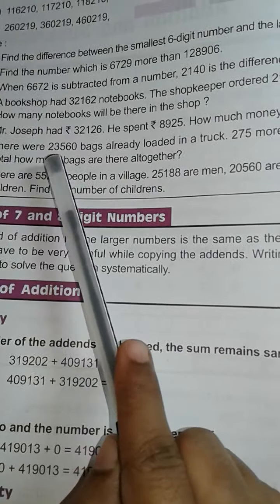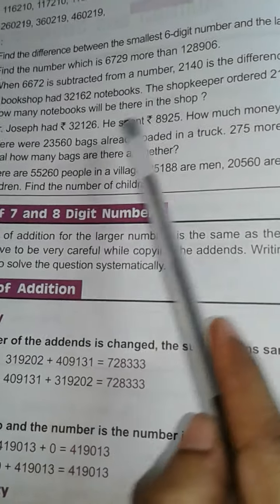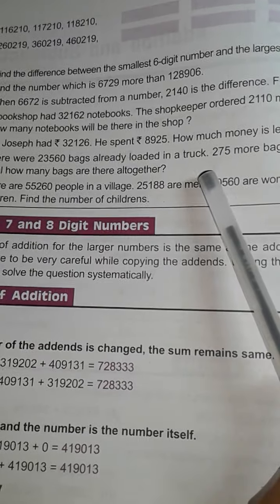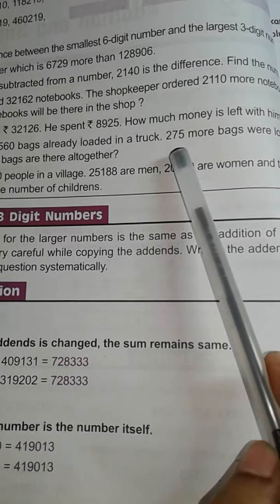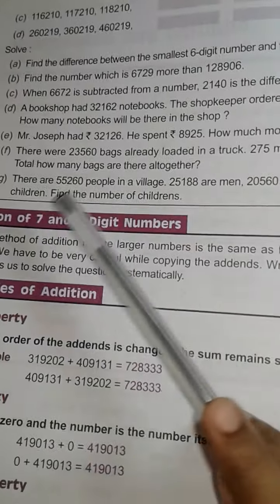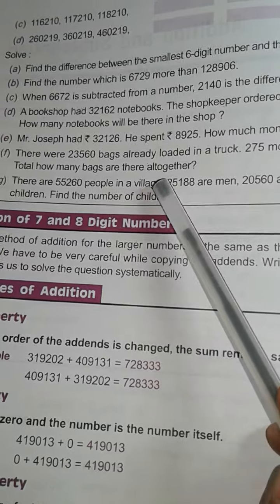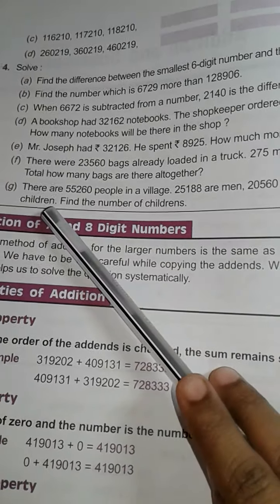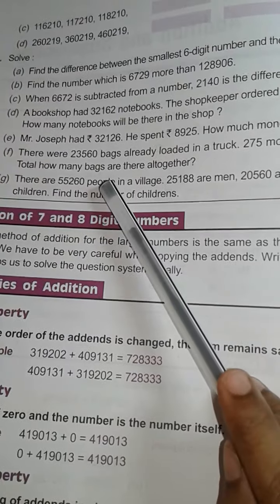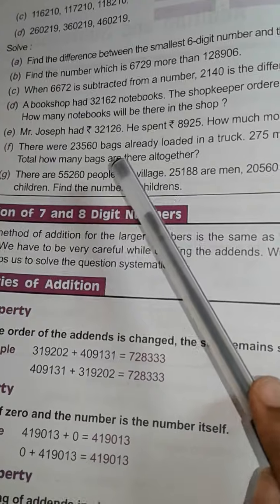Then F. There were 23,560 bags already loaded in a shop. 275 more bags were loaded. Total how many bags are there altogether? Total means children, what do you do? Yes, addition. So you add these two numbers, then you get your answer.